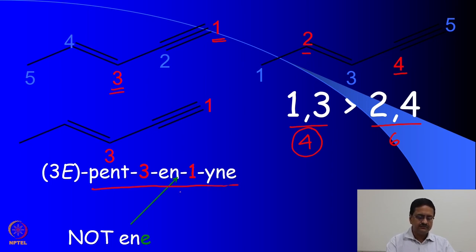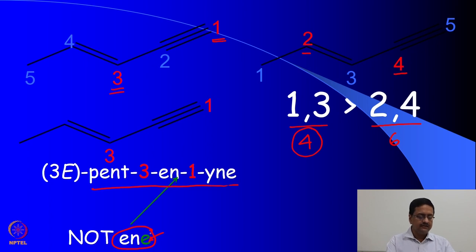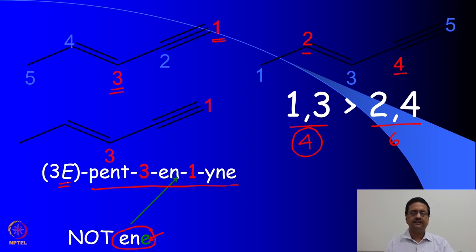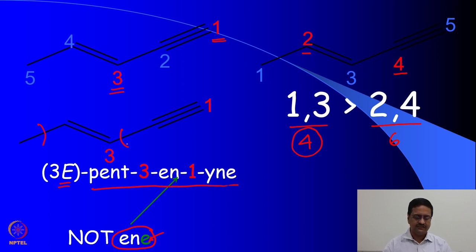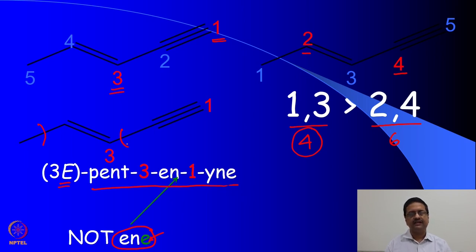You must notice two things: when designating the double bond we write only '-ene' and have dropped the terminal 'e'. We also identified the double bond as E, meaning these two groups are on opposite sides of each other — making it trans — and in this case we write it as E.